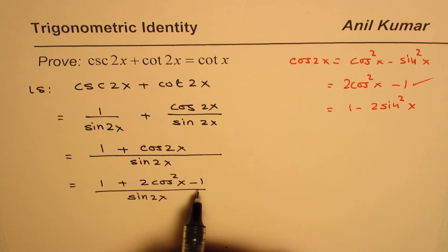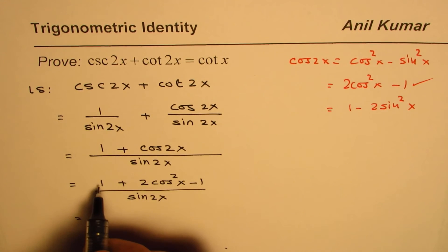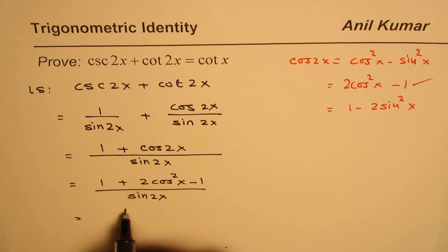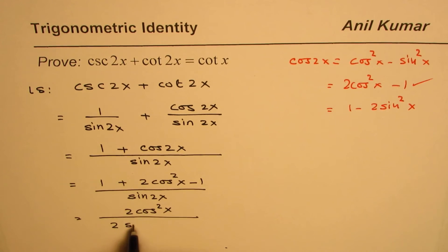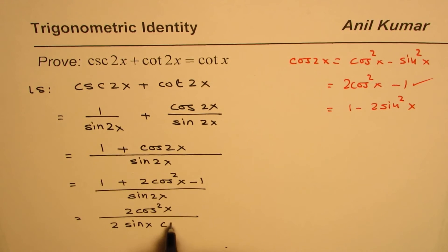So from here, what we get is we'll rewrite this as minus 1 plus 1 is 0. We get 2 cosine squared x. The denominator is sine 2x. Sine 2x can be written as 2 sine x cosine x.